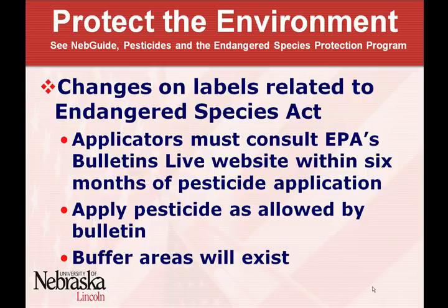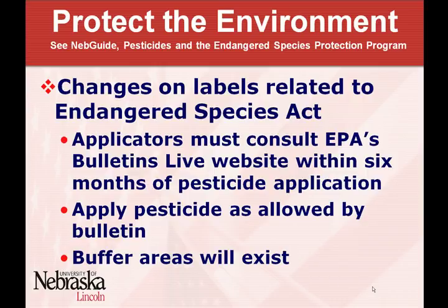Shifting over to endangered species — there's a good NEP guide that covers that pretty well. EPA has a regulation in effect right now, and what we're waiting for in Nebraska is for information to appear on pesticide labels. When it does, it will list a URL for a website. When that information appears on the label, you're obligated to go to that website and check for any bulletins present for your area. Within six months of making an application, you have to check that site, and if there are endangered species near where you plan to apply, you must follow the bulletins' guidance on buffers or other measures.